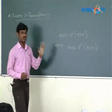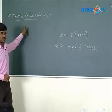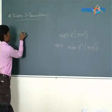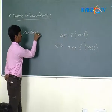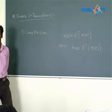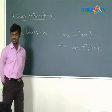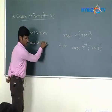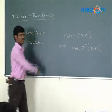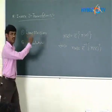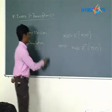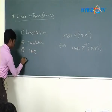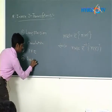There are four methods used to find the inverse Z transform of a given Z domain function. The first is the long division method, also called the power series method. The second is the convolution method. The third is the partial fraction expansion method, and the fourth is the residues method.